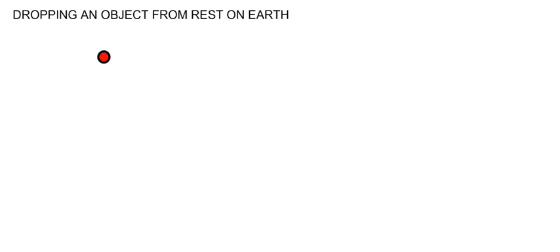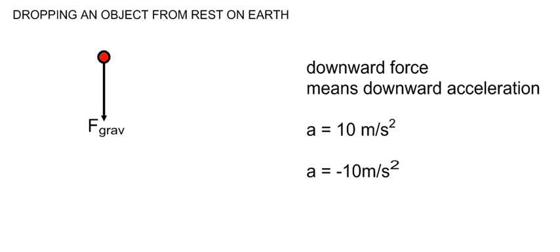The motion of any object can be explained in terms of the forces acting on it using Newton's laws of motion. In the case of projectiles, and ignoring air resistance, the only force acting on objects in the air is the gravitational force downwards. This downward force means a downward acceleration. No matter what the mass of the body is, the downward acceleration on all objects will be 10 meters per second squared. We can write this as minus 10 meters per second squared if we use the convention that downward is negative and upwards is positive.